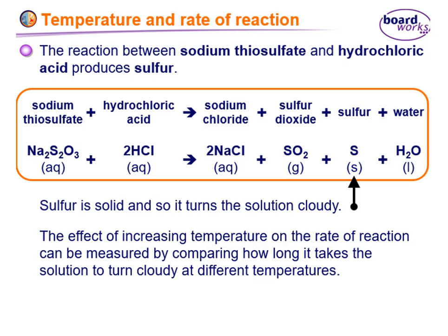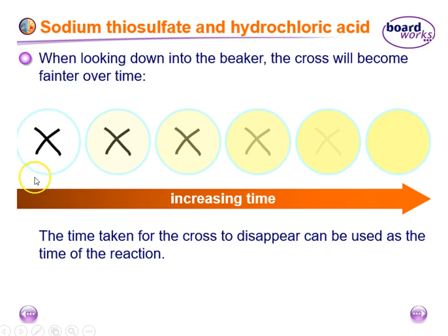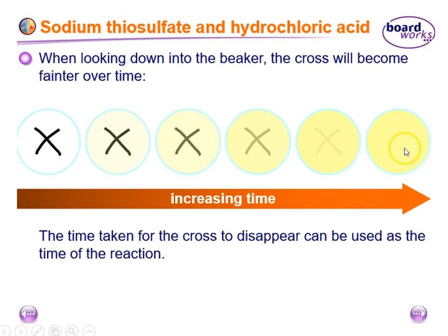For the temperature experiment, we use hydrochloric acid and sodium thiosulfate. When mixed, they produce sulfur — a precipitate — which makes the solution cloudy. You place the flask on a piece of paper with a cross drawn on it and look down through the solution. As the reaction progresses and more sulfur forms, the solution gets cloudier until eventually you can't see the cross anymore, at which point you stop the timer. The reaction may still be continuing, but it can no longer be measured.